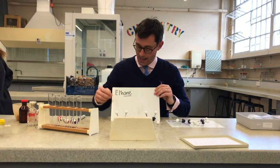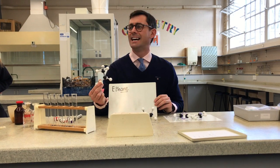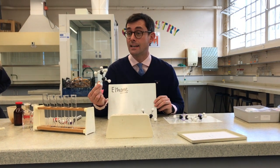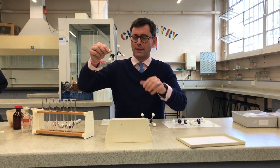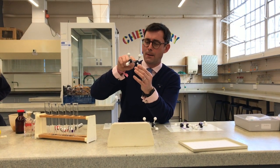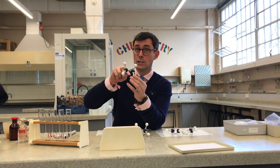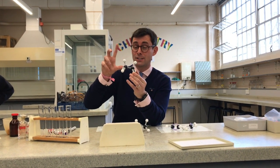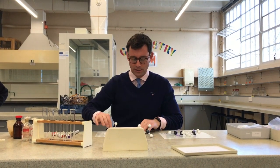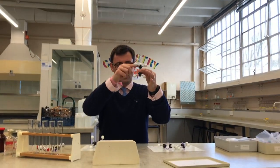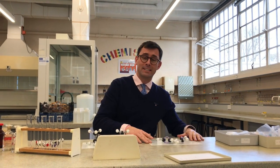These are alkanes. What's the general formula of an alkane? CnH2n+2. So what that tells us: if we've got two carbons, n equals 2, therefore 2n = 4, plus 2 equals 6. So two carbons gives us 6 hydrogens — 1, 2, 3, 4, 5, 6. Fantastic.